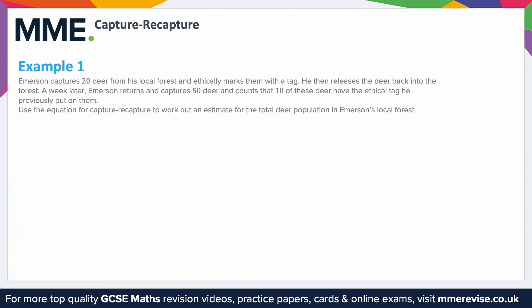So here we're trying to find the total population, so we can use this rearrangement of the formula, where capital N is going to be our total population, lowercase n is going to be the size of our second sample, lowercase m is going to be the number recaptured — the animals you captured in the second sample that have the ethical tag — and uppercase M is the size of our first sample.